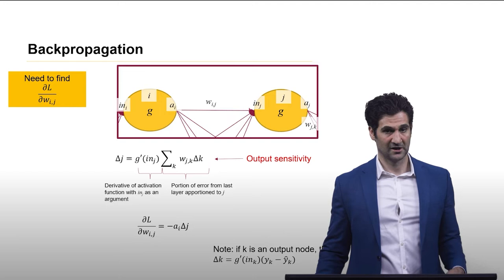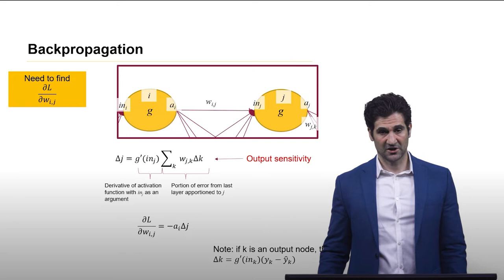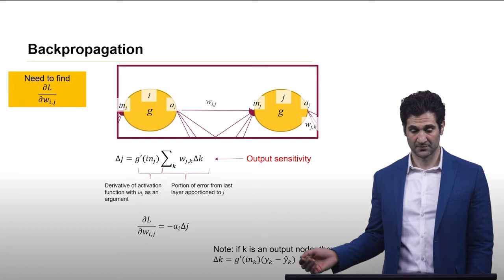And that's where we have this thing called the output sensitivity that is computed derived from that. And you see the output sensitivity for layer J is dependent on the output sensitivity for the previous layer, layer K in this case.